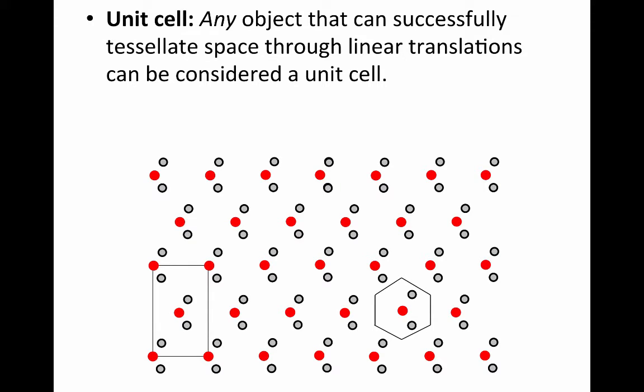So the first thing to remember is that a unit cell is any object that can successfully tessellate space through linear translations. Here we see two examples where we have a rectangle and a hexagon that can translate through space. What we see when we do this translation is that the atoms within each unit cell are identical. So we have this invariance of local environment.